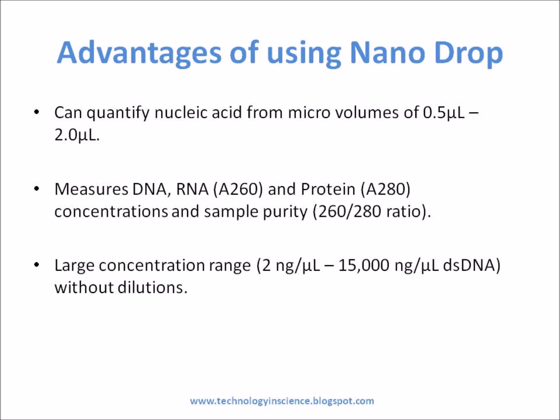Nanodrop is a UV-visible spectrophotometer device from Thermo Scientific, which can quantify nucleic acid from micro volumes of 0.5 to 2 microliters. Features include direct, easy measurements in less than 5 seconds — just pipette and wipe. It measures DNA, RNA, and protein concentrations and sample purity, with a large concentration range of 2 ng/µL to 15,000 ng/µL for double-stranded DNA without dilutions.